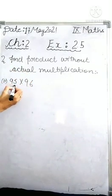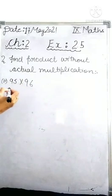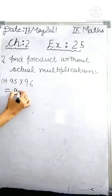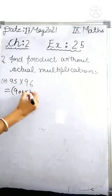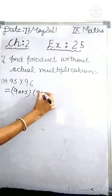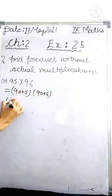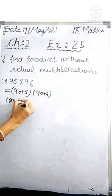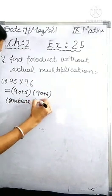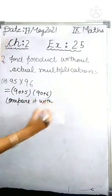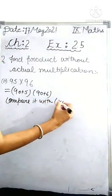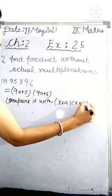So here I have 95 multiply 96. I can write 95 as 90 plus 5, and 96 as 90 plus 6. Compare it with x plus a, x plus b.